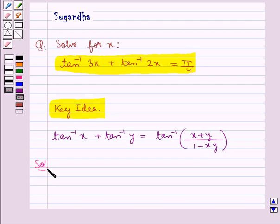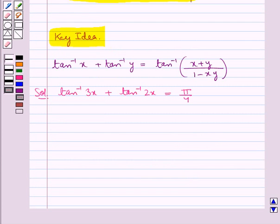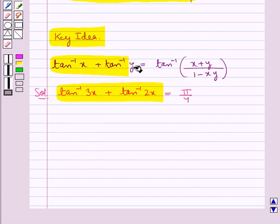Let's proceed with the solution now. We are given tan inverse 3x plus tan inverse 2x is equal to pi by 4. We have to find the value for x. Now on the left hand side we can apply this formula given in the key idea.